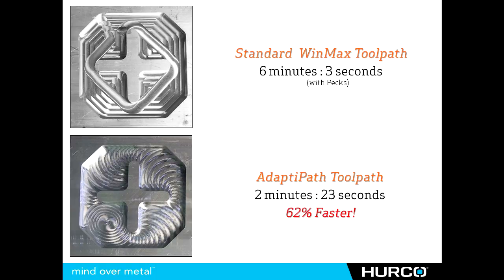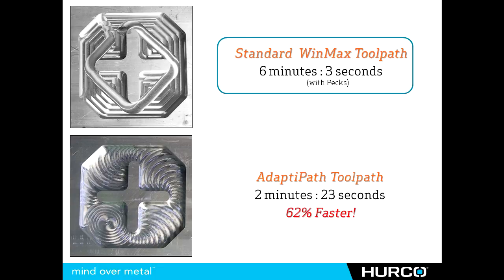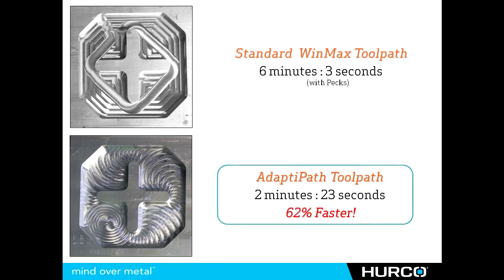From a time standpoint, the standard toolpath took six minutes and three seconds using peck depths. With Adaptive Path — the exact same tool and the exact same speeds and feeds, even though we probably could have increased the feed rates and RPM — we didn't, to keep this an apples-to-apples comparison. That ran 62% faster at two minutes and 23 seconds, cutting in one full-depth pass.